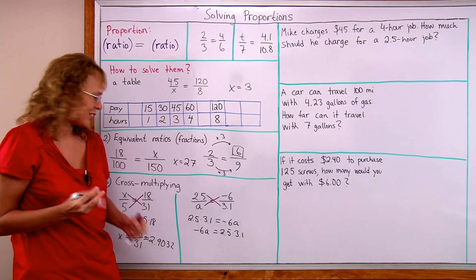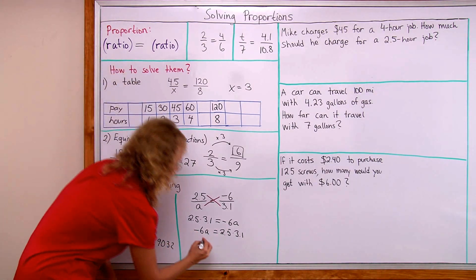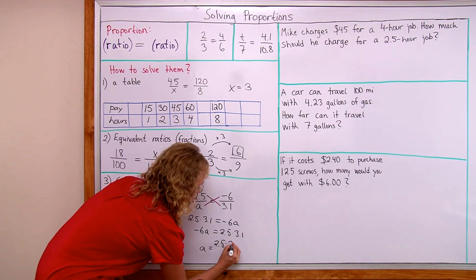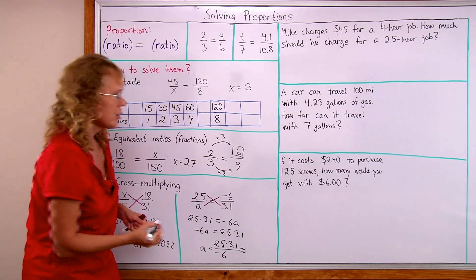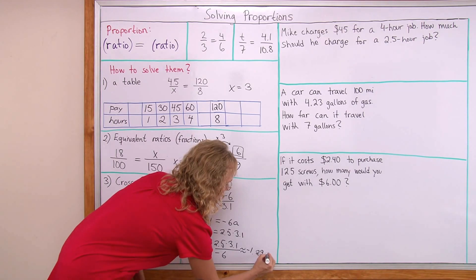But then at this point, you need to divide both sides by this number, by negative 6. So we get A equals 2.5 times 3.1 divided by negative 6. And then that is about minus 1.292.